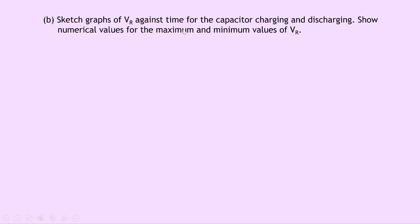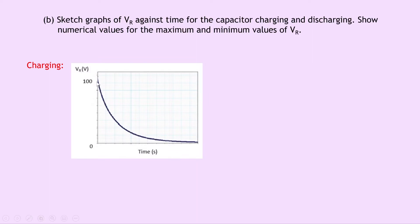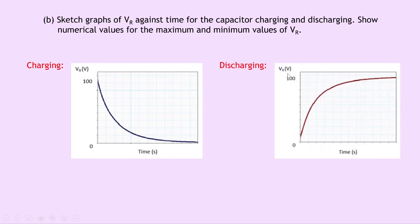Part B asks to sketch graphs of VR against time for the capacitor charging and discharging, showing numerical maximum and minimum values. For the charging capacitor, VR starts at 100 volts — because the voltage across the resistor is initially at 100 volts — and decreases over time. For the discharging capacitor, VR starts at 0 volts and increases over time until it reaches its maximum of 100 volts.